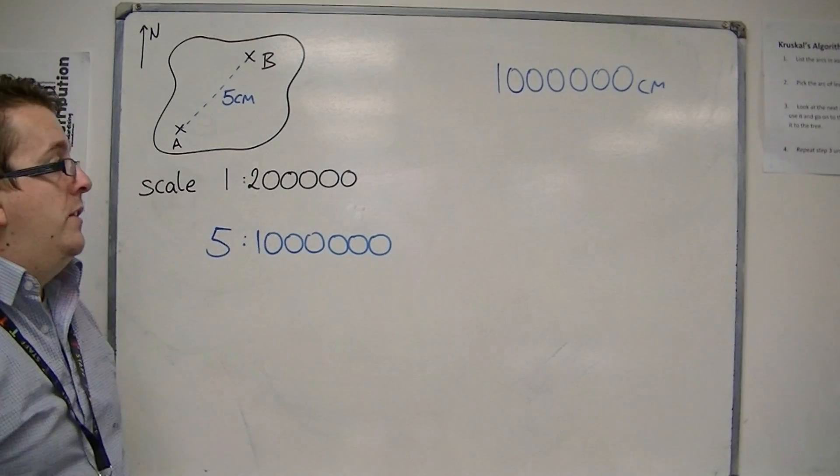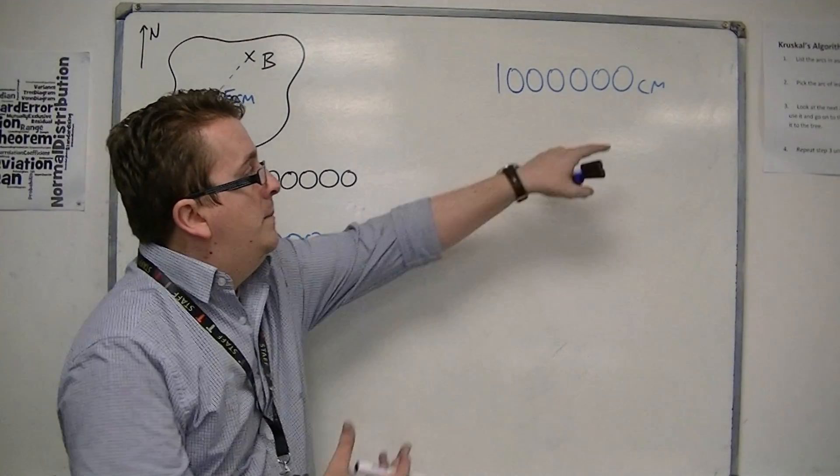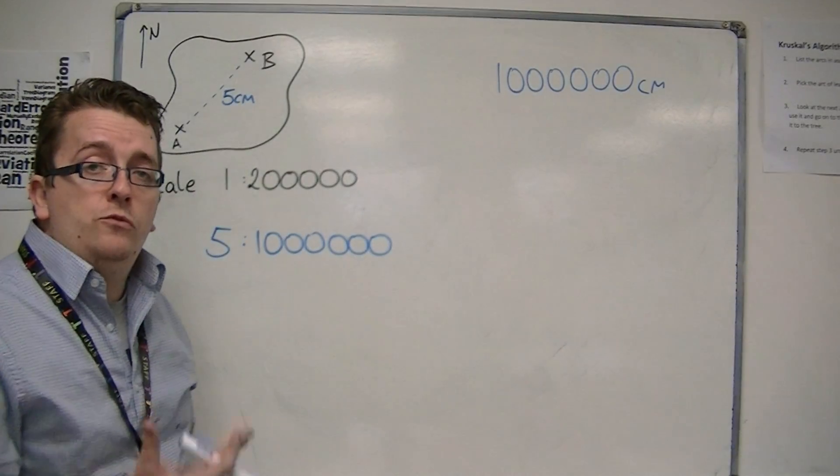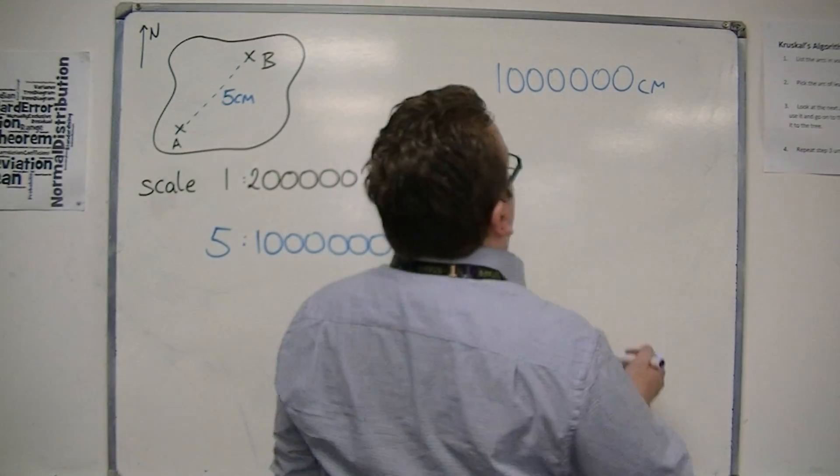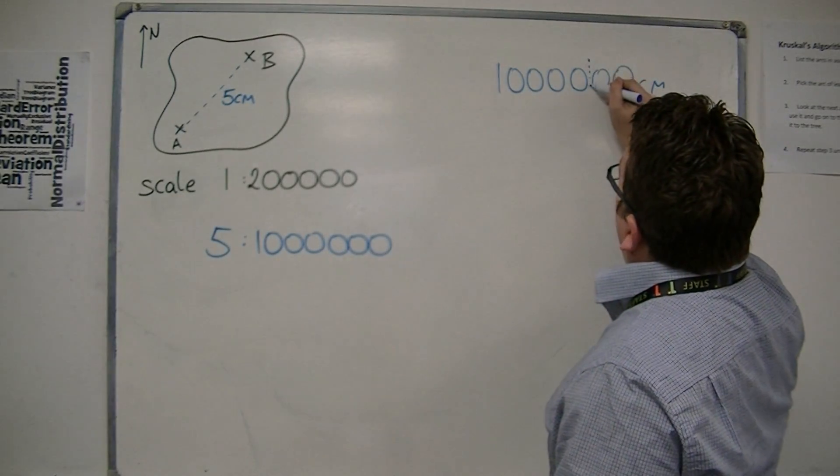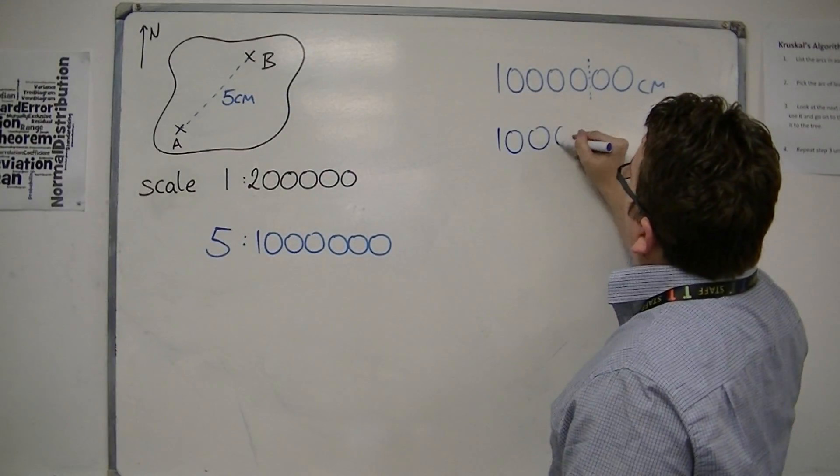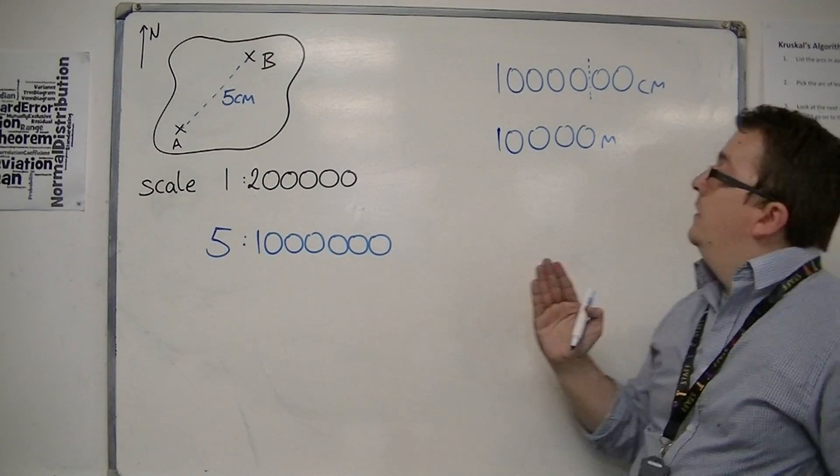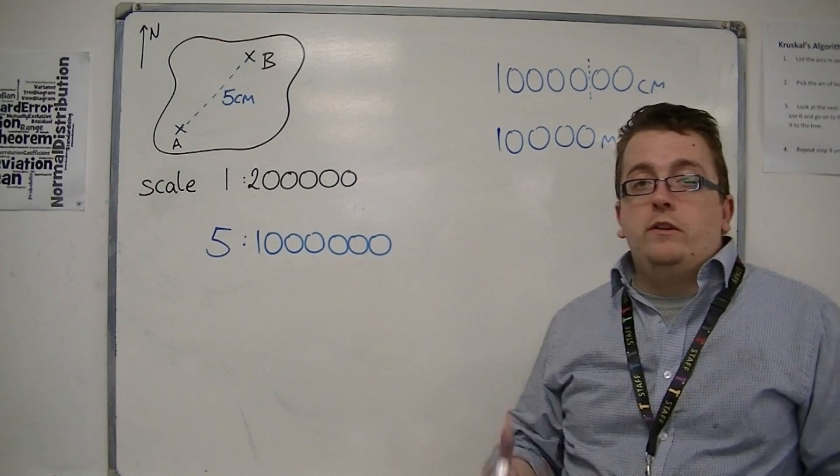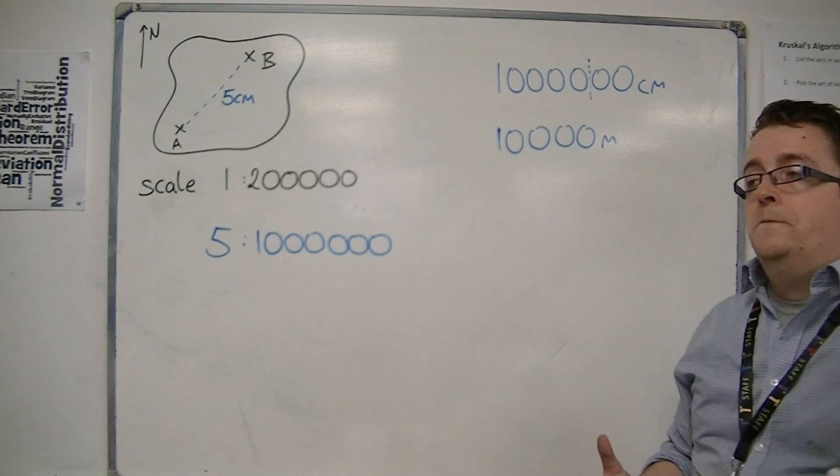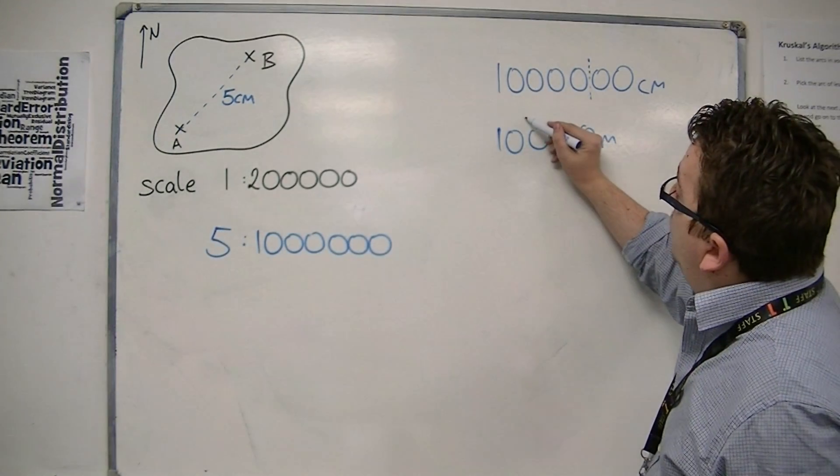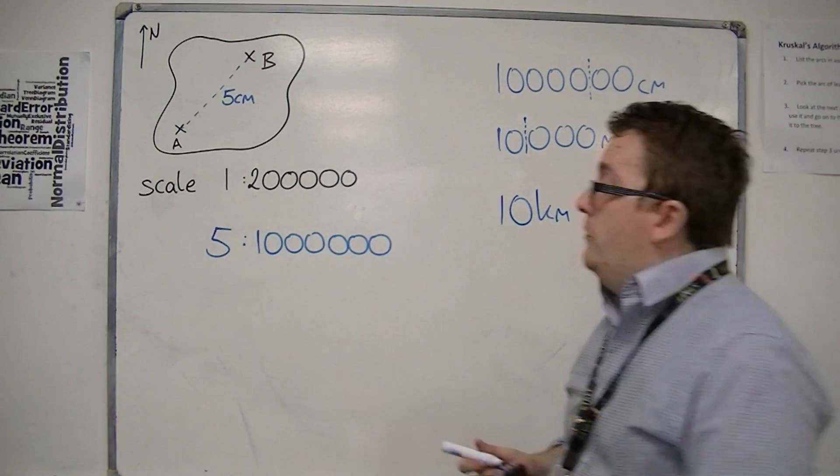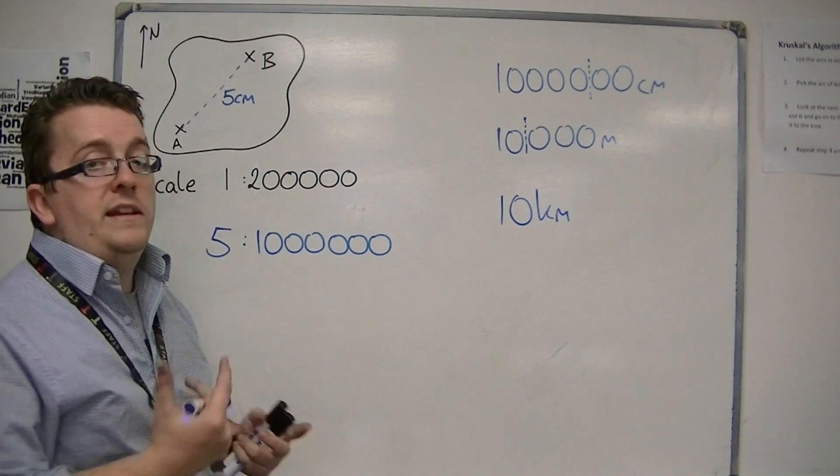So I could write down a million centimetres as my answer. But a million centimetres, it's too small a figure to use. If I'm going to say how far it is from town A to town B, it's unlikely I'm going to measure it in centimetres. So what we'd like to do is measure it in metres maybe. So that's ten thousand metres because you just divide by a hundred. And then, we don't really judge two towns together in metres either. We might judge it in kilometres. So we divide by a thousand to get to ten kilometres.